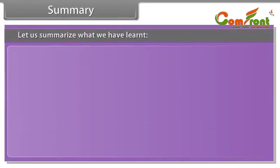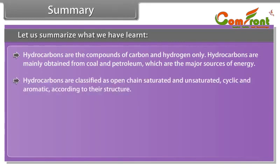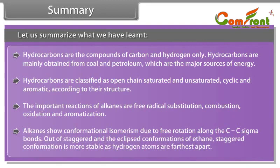Summary: Let us summarize what we have learnt. Hydrocarbons are compounds of carbon and hydrogen only. Hydrocarbons are mainly obtained from coal and petroleum, which are the major sources of energy. Hydrocarbons are classified as open-chain saturated and unsaturated, cyclic and aromatic, according to their structure. The important reactions of alkanes are free radical substitution, combustion, oxidation and aromatization. Alkanes show conformational isomerism due to free rotation along the C-C sigma bonds.